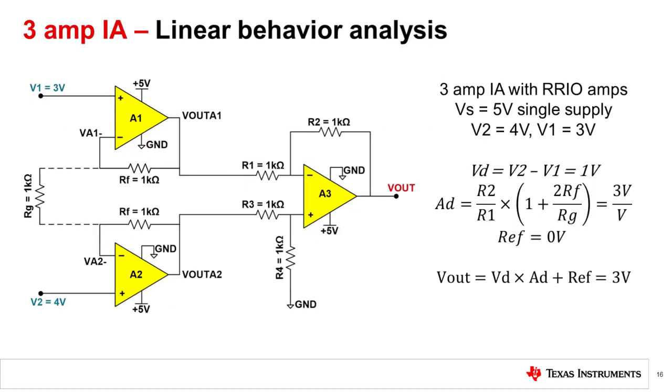Similar to the 1-amp IA analysis, the 3-amp IA needs to conform to the input and output limitations of all three amplifiers. In order to achieve linear behavior, internal nodes of the IA must be analyzed.